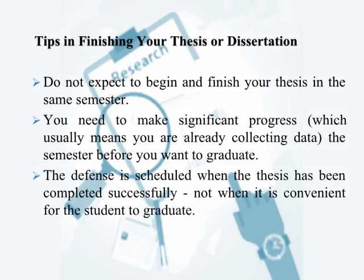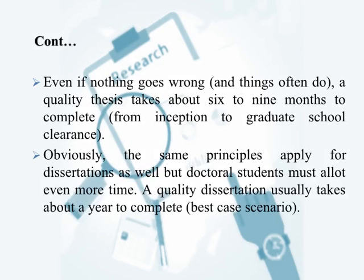Tips for finishing your thesis or dissertation: Do not expect to begin and finish your thesis in the same semester. You need to make significant progress — usually already collecting data — the semester before you want to graduate. The defense is scheduled when the thesis has been completed successfully, not when it is convenient for the student. Even if nothing goes wrong, a quality thesis takes about six to nine months from inception to graduate school clearance. A quality dissertation usually takes about a year to complete in the best-case scenario.